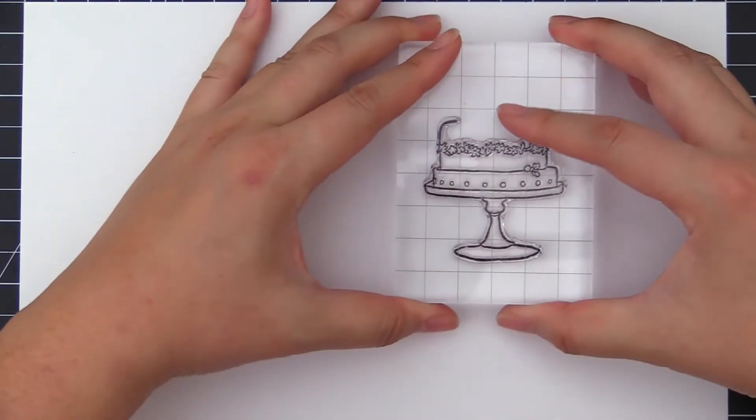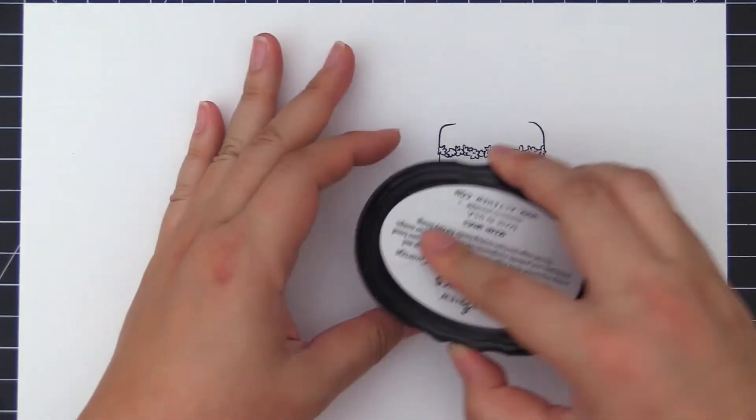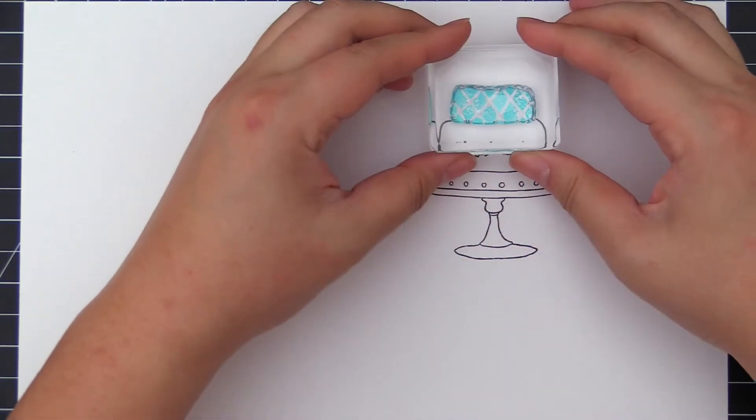The images from this set are designed in a way so you can layer a part of the outline images for a unique look.